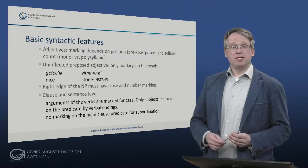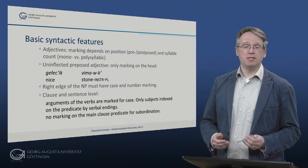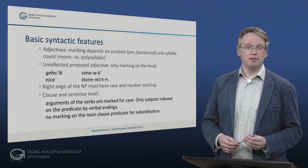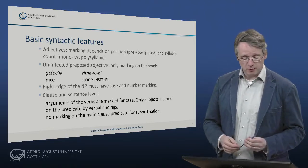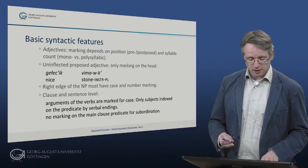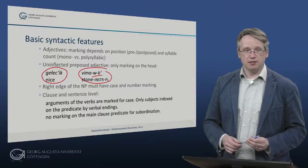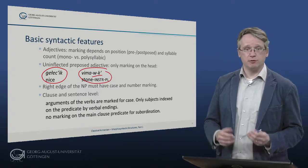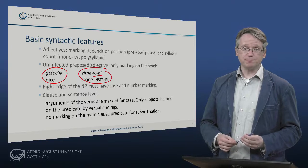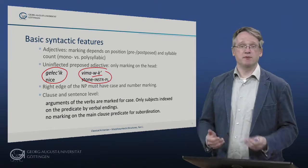As for adjectives, we have already seen in the lecture on morphology that marking on adjectives is a bit more complex and depends on position and word length, which means that in cases with no overt inflection on the adjective we can have actually head marking structures exceptionally. So this is the case, for example, where we have gerizik wie mavk — no marking on the adjective but only on the noun itself: stone, instrumental, plural, where the marking is only on the noun and the adjective is unmarked. However, the right edge of the whole NP must always have case and number marking. In the clause, arguments of the verbs are marked for case, and only subjects are indexed on the predicate by the verbal endings, not objects. On the sentence level, there is no marking on the main clause predicate in the case of subordination.